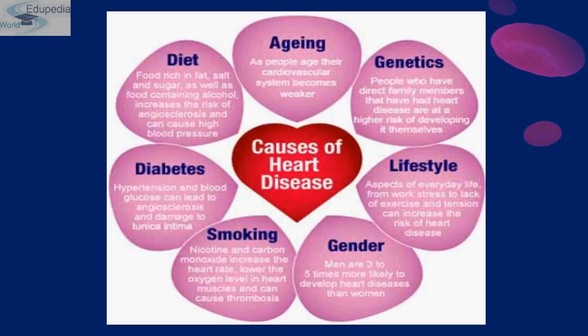Nicotine and carbon monoxide increase the heart rate, lower the oxygen level in heart muscles, and can cause thrombosis. Another major cause is diabetes — hypertension and blood glucose can lead to angiosclerosis and thus damage the tunica intima. Another major cause is diet: food rich in fat, cholesterol, salt, and sugar, as well as food that contains alcohol.